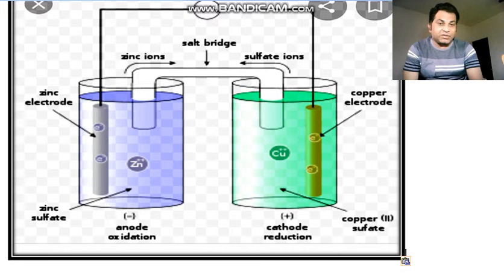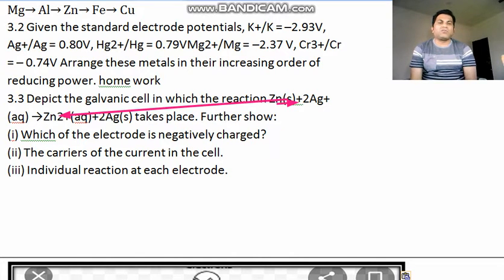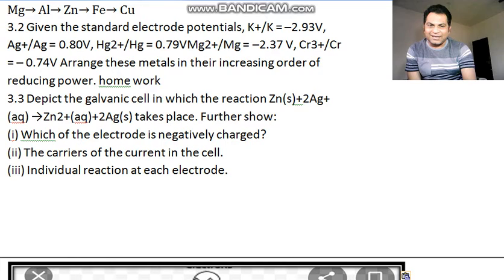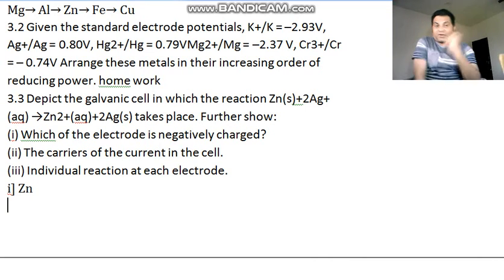This is our first part of the question - depict the galvanic cell which has zinc and silver. You can see zinc is going to oxidize out. That's why zinc is going to oxidize. Dear students, the negative electrode is nothing but the negative part. Here we are writing - first answer is zinc. The answer is zinc.